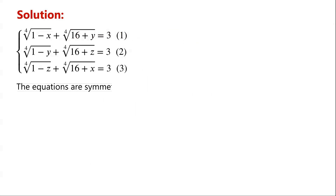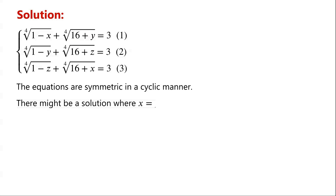The equations are symmetric in a cyclic manner. The first equation has x and y. The second has y and z. And the third has z and x. This symmetry suggests that there might be a solution where x equals y equals z.